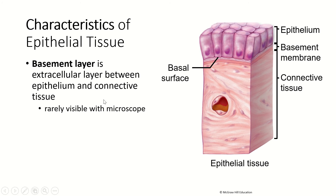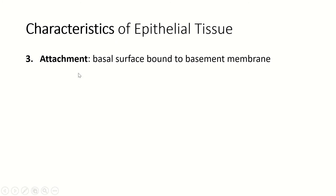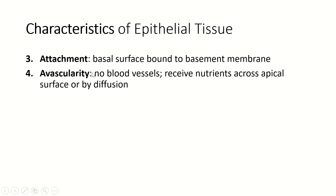Your textbook says you can clearly see the basement membrane on a microscope — it lies. We usually can't see it on a microscope, so just know that when you're looking at microscope slides, you're not going to see the basement membrane most of the time. Epithelial tissues are always bound to a basement membrane — always attached to something. Blood, for example, is a connective tissue that is obviously not connected or bound to anything.